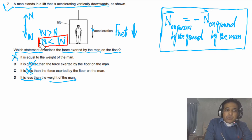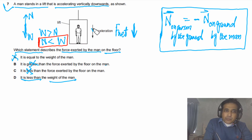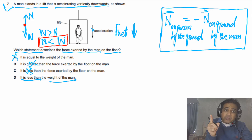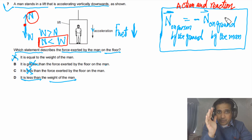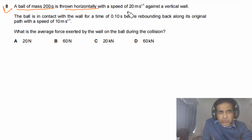These two key concepts must be clear: acceleration is downward so net force is downward; and the two forces — weight and normal reaction — act on the person. The force the person exerts on the ground equals the normal reaction in magnitude but is opposite in direction, because these two forces are action-reaction pairs forming a Newton's third law pair. That's why they have the same magnitude but opposite direction. The answer for this question is D.